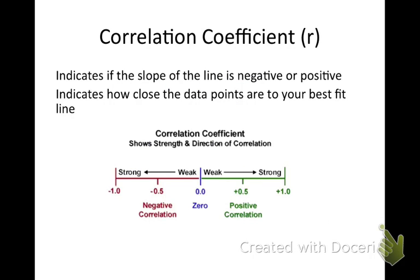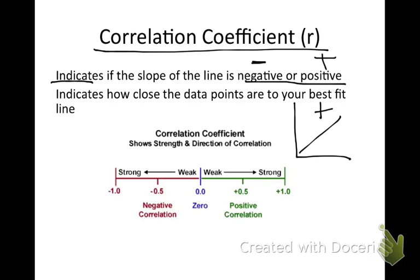With our line of best fit, we can also look for a correlation coefficient. That indicates if the slope of the line is negative or positive. If it's a positive r, it's going to be a positive relationship. If it's a negative r, it's going to be a negative relationship. Remember, positive increases and negative will decrease.